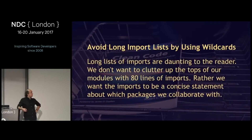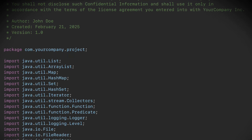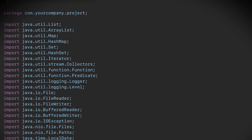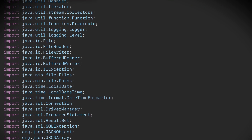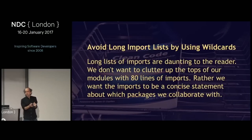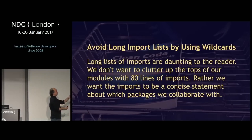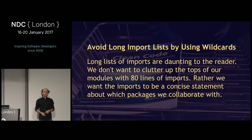Uncle Bob has the same view on this that I do: avoid long import lists by using wildcards. Long lists of imports are daunting to the reader. We don't want to clutter up the tops of our modules with 80 lines of imports, but people do. What happens is your eyes slip off the screen, which is why they added the feature that you can now fold them away — they're so important that they default to 'don't worry about this, you don't need to see this.' Rather, we want the imports to be a concise statement about which packages we collaborate with.